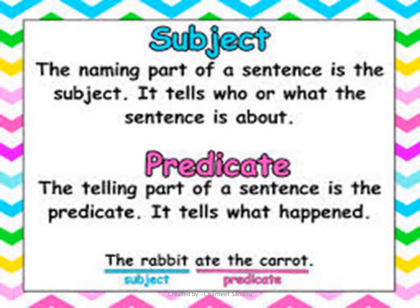A quick recap: the subject is the naming part of a sentence — it tells who or what the sentence is about. The predicate is the telling part of the sentence — it tells what happened. For example, 'The rabbit ate the carrot.' Here 'the rabbit' is the subject because we are talking about it, and 'ate the carrot' is the action that took place, so that is the predicate.